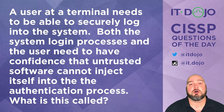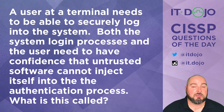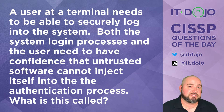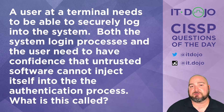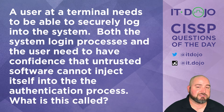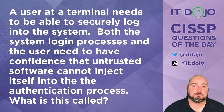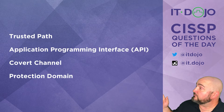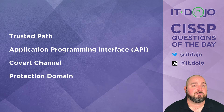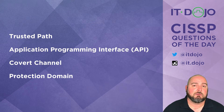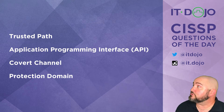A user at a terminal needs to be able to log in to a system. The system processes as well as the user need to have a degree of assurance that an untrusted process is not going to be able to somehow inject itself into the authentication pathways. What is this requirement called? There are your answer choices — click pause if you need to give it some thought, then click play when you're ready.